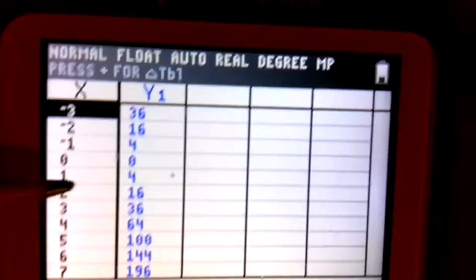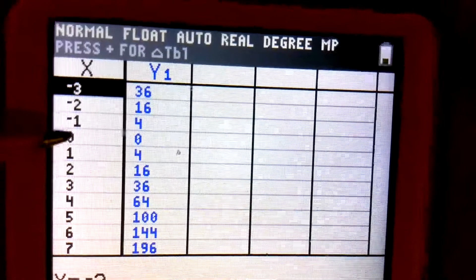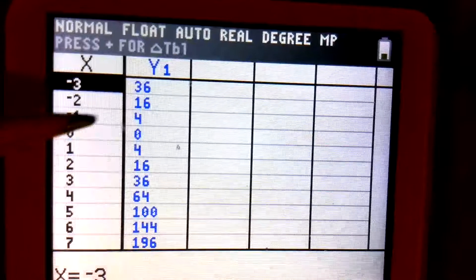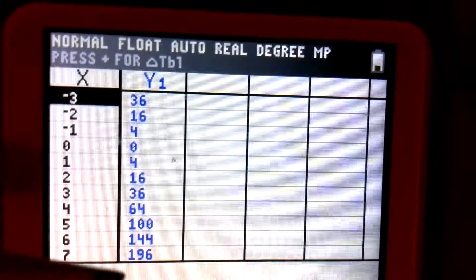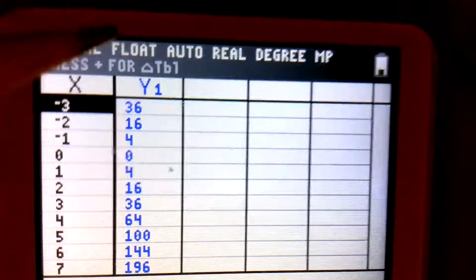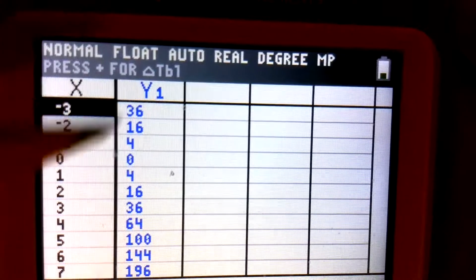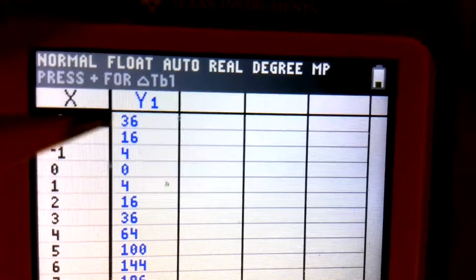Now, notice, there's our 0. It's not always 0, 0 either, but this happened to be. And then see, 4, 4, 16, 16, 36, 36. And if I arrowed up one more up above, if I went to the negative 4, it would be 64. Okay? So that's the chart.